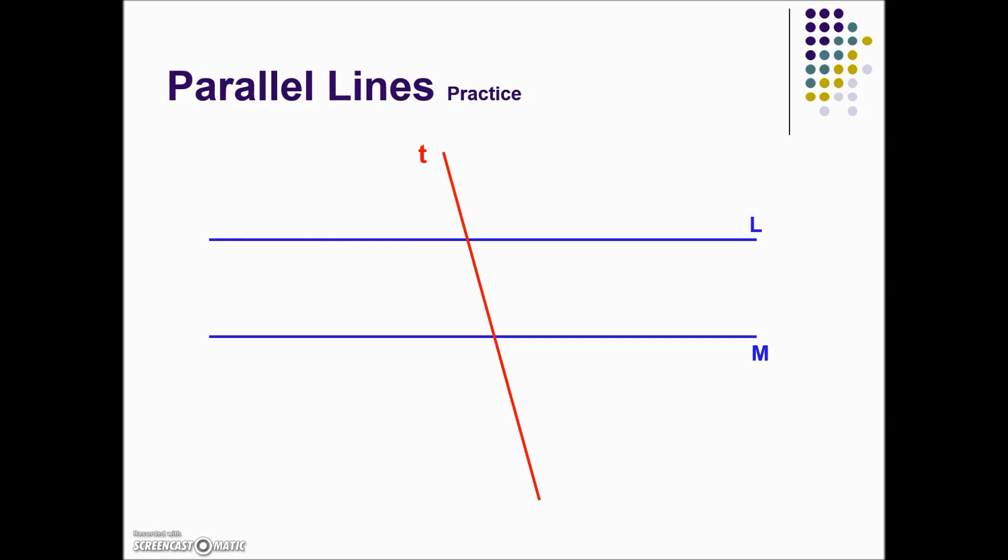Let's take a look at an example. Parallel lines L and M are cut by a third line, the transversal T. We know this obtuse angle has a measure of 118 degrees.